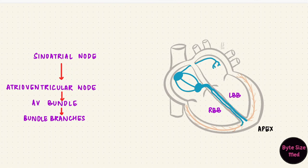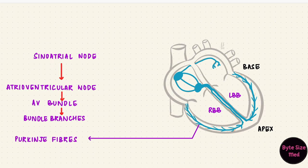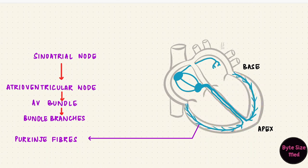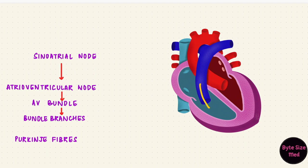From the apex, the branches turn upwards towards the base of the heart. These branches are called the Purkinje fibers. Depolarization therefore spreads from the apex towards the base of the heart, and from the endocardium (the innermost layer) towards the epicardium (the outermost layer). Depolarization is followed by contraction of the ventricles, squeezing blood out towards the base — into the pulmonary trunk and the aorta.